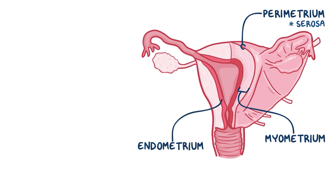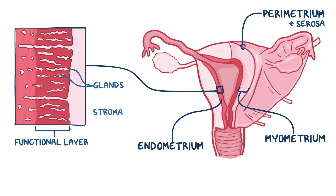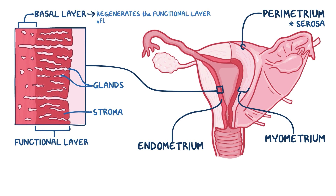The endometrium has two layers: an inner functional layer made up mainly of glands and supporting connective tissue called stroma, and an outer thin basal layer which regenerates the overlying functional layer after each menstrual cycle.